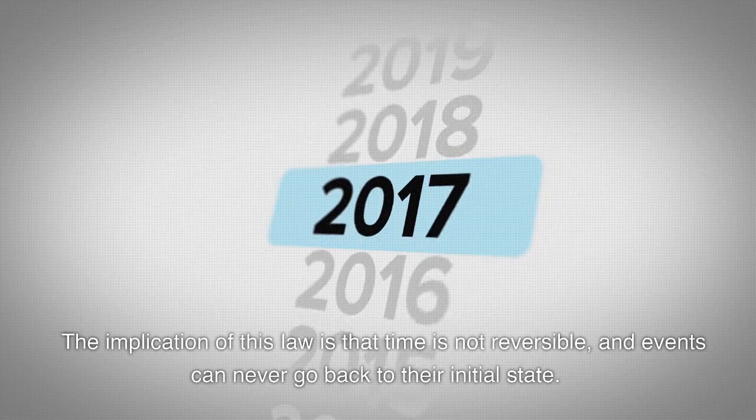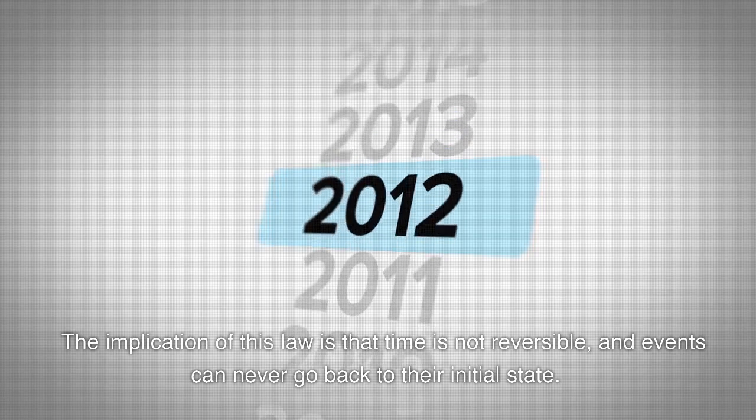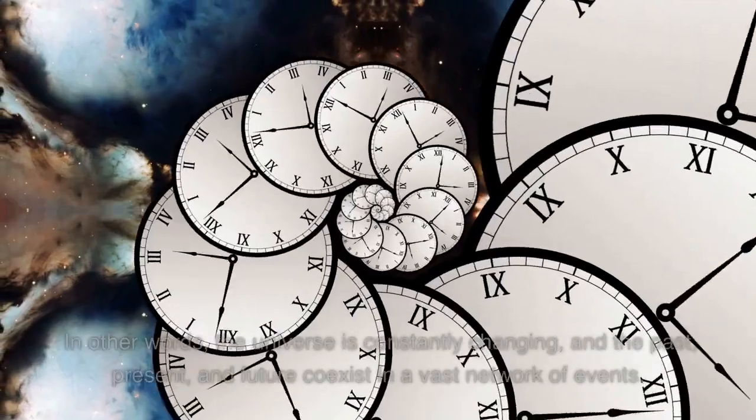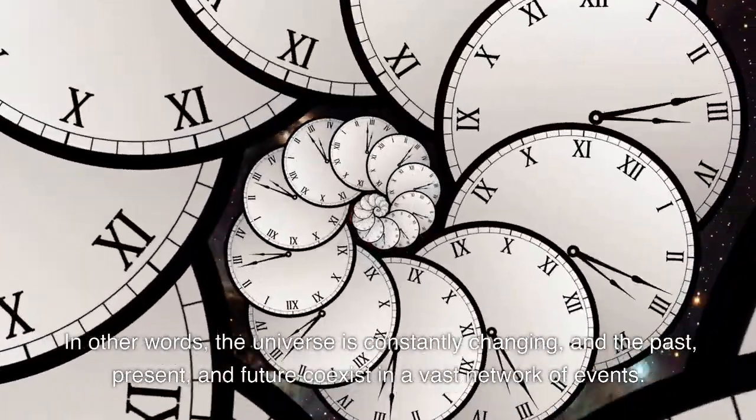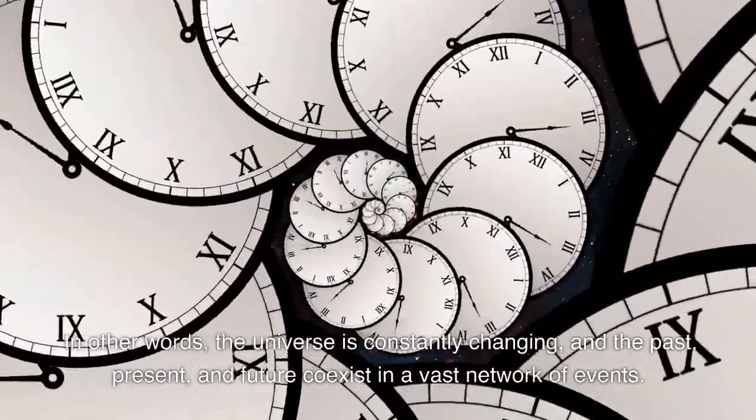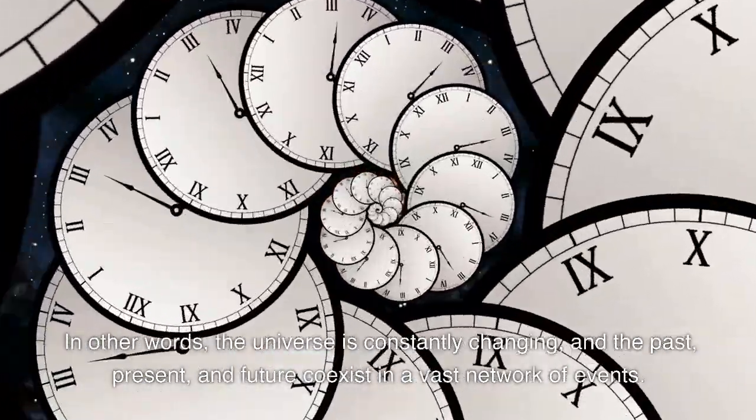The implication of this law is that time is not reversible and events can never go back to their initial state. In other words, the universe is constantly changing and the past, present and future coexist in a vast network of events.